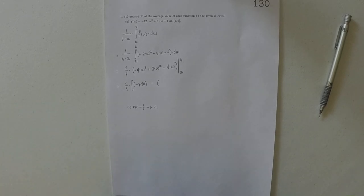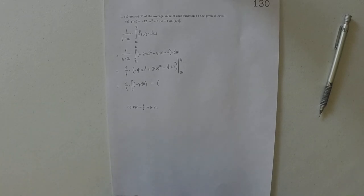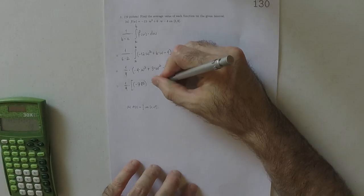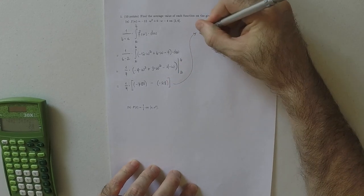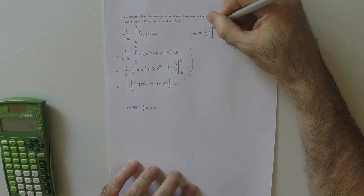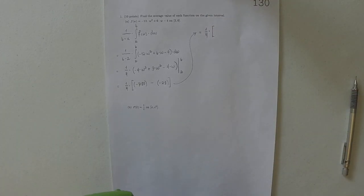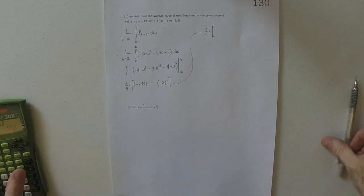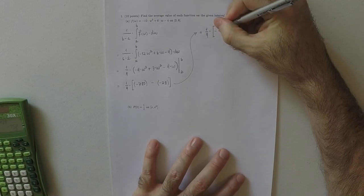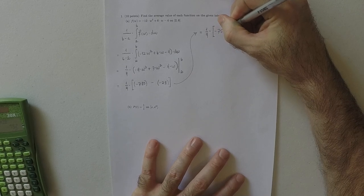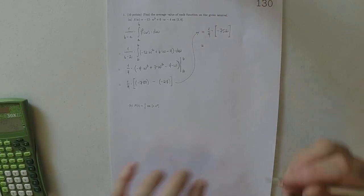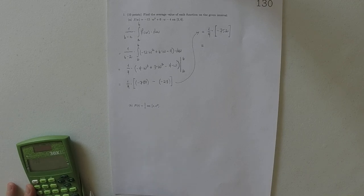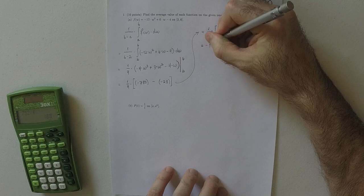And then subtract. Now we're going to evaluate that at 2. So negative 4 times 2 cubed, 3 times 2 squared, minus 4 times 2. Subtract negative 28. So this would be a fourth multiplied by, so negative 780 and then plus 28 is negative 752. And then that's divisible by 4. So I'll go ahead and do that. So that would be negative 188.